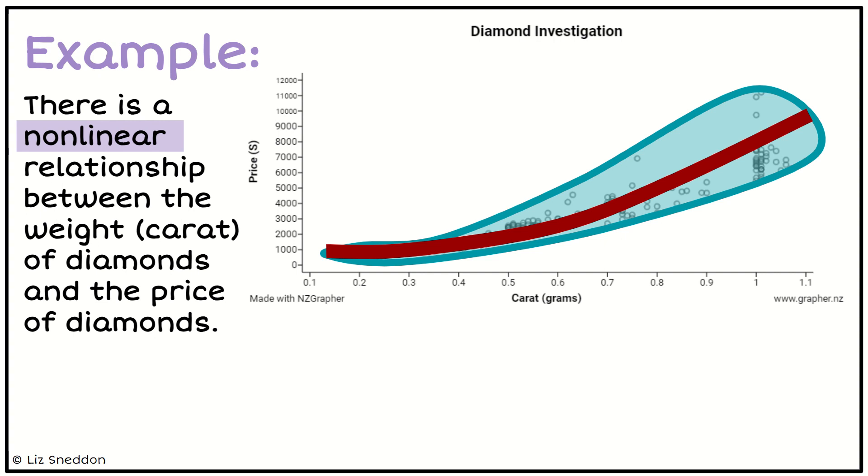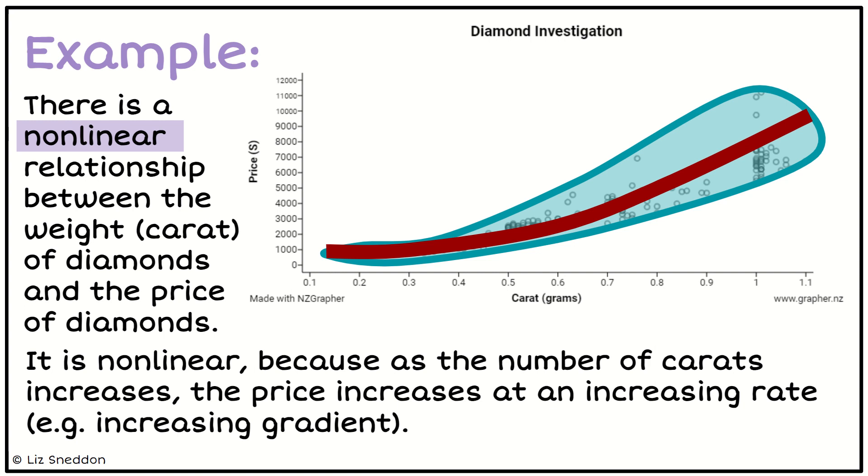I've got a non-linear relationship between the weight of diamonds and the price of diamonds. So I've put it in context again, and then I want to be able to justify why. So it's non-linear because, and I can talk about as my number of carats. So it's always that X variable. As the number of carats increases, the price increases at an increasing rate. So the price is going up much more each time.